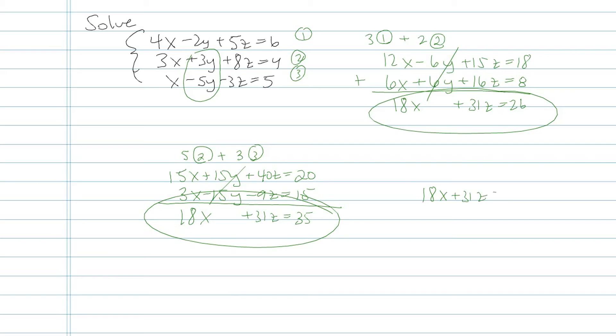18x plus 31z is equal to 35, that's my second one. First one was 18x, oh, notice how they have the same x's and z's. That's a problem. Like if I do top equation minus bottom equation, I'd be left with 0 is equal to 11. Huh? Not true. Never true.